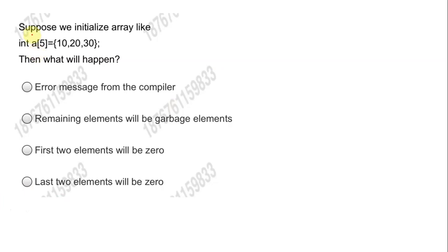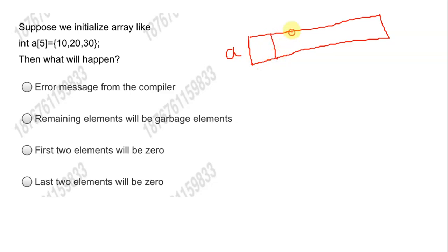Let us see the first question. The question says, suppose we initialize the array like int a[5] = {10, 20, 30}. We have an array of size 5 integers, out of which we are initializing the first 3. The most important thing to keep in mind is whenever we initialize at least one element of an array, all the remaining elements will be automatically initialized to 0.